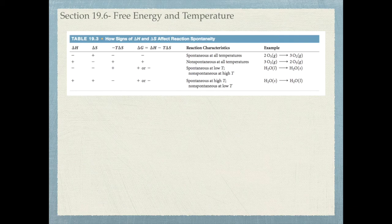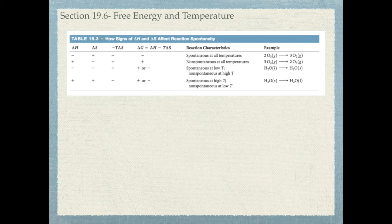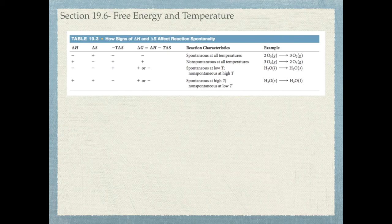Here's where temperature plays a role. What if ΔH is negative and ΔS is also negative? The question is which has a bigger impact. If the negative TΔS term is extremely large and positive compared to ΔH, then ΔG becomes positive and the reaction is non-spontaneous. You need low temperature in this case — at low temperature, ΔH has a larger impact, making ΔG negative and the reaction spontaneous. If temperature is too large, the negative TΔS term takes over, making ΔG positive and the reaction non-spontaneous.